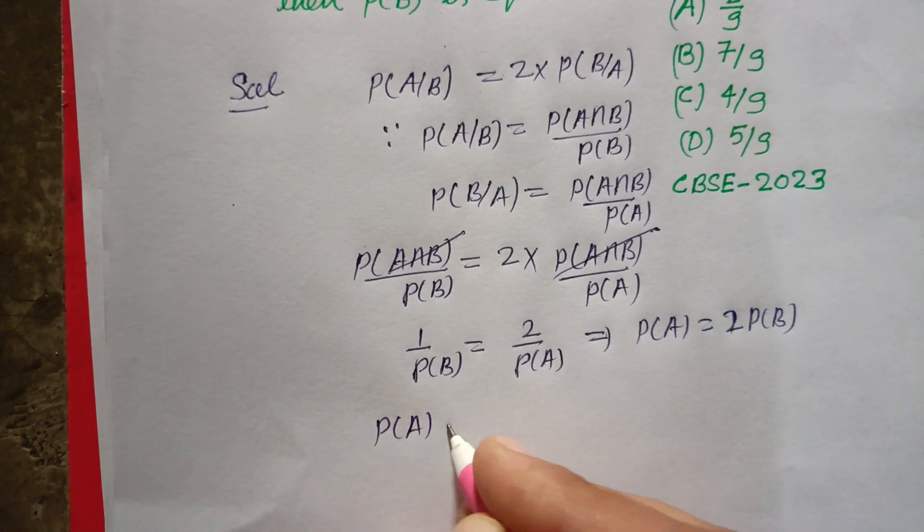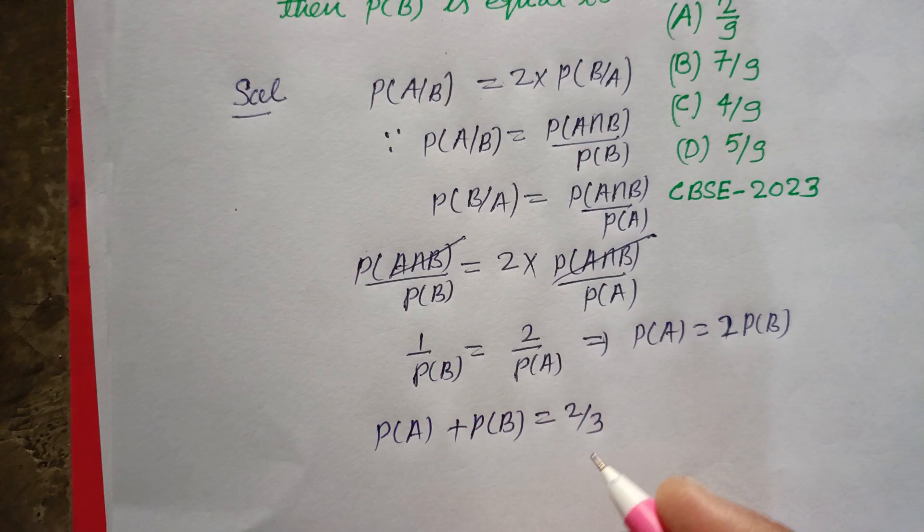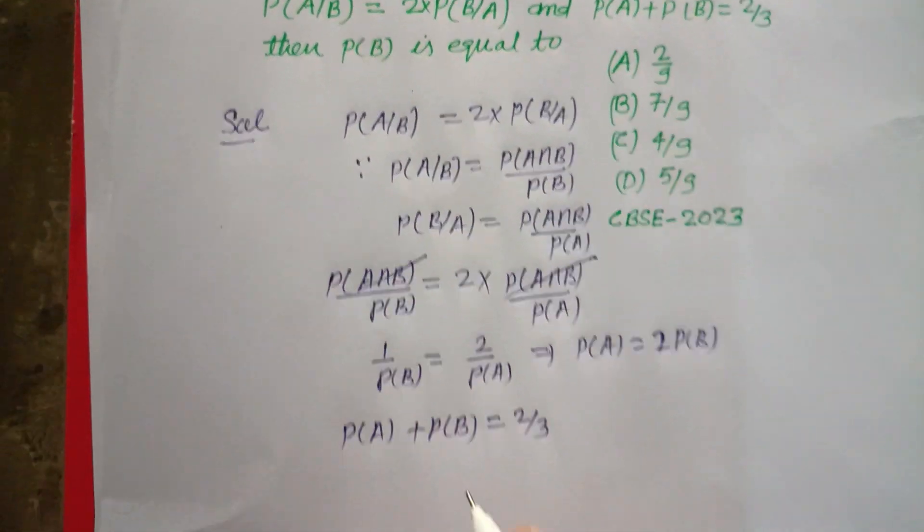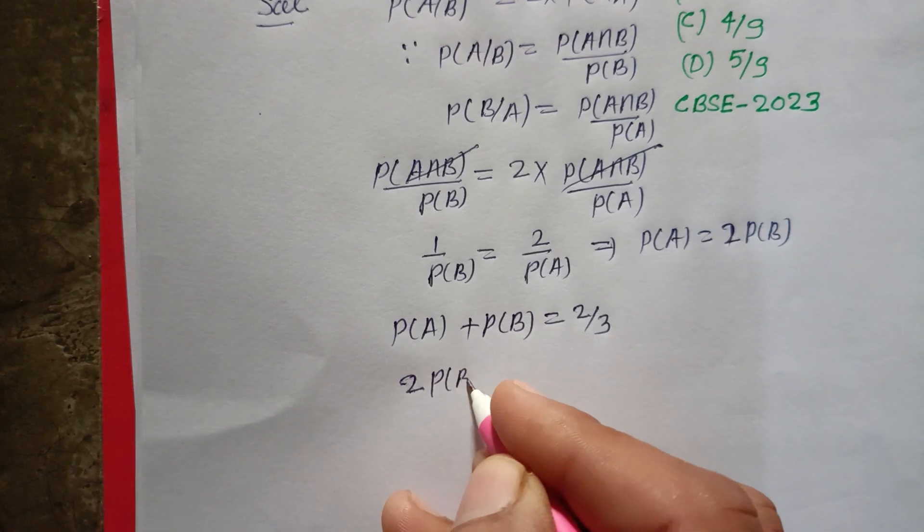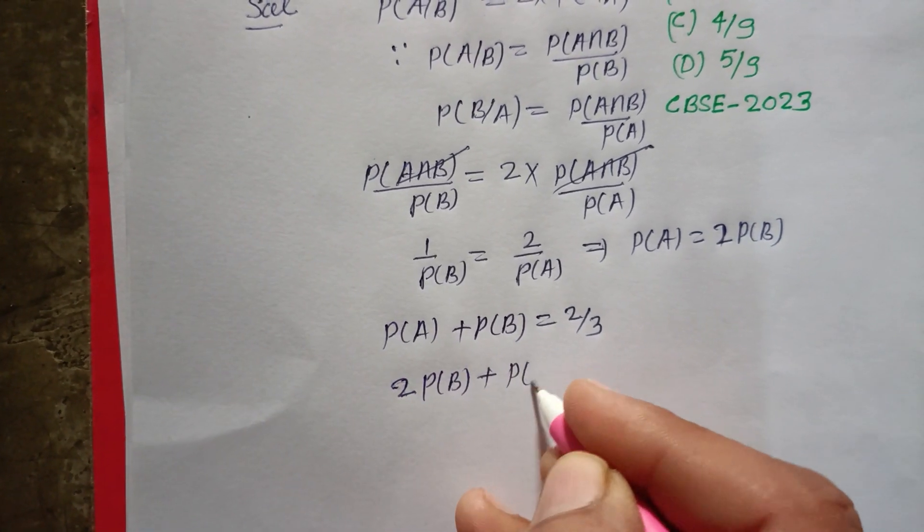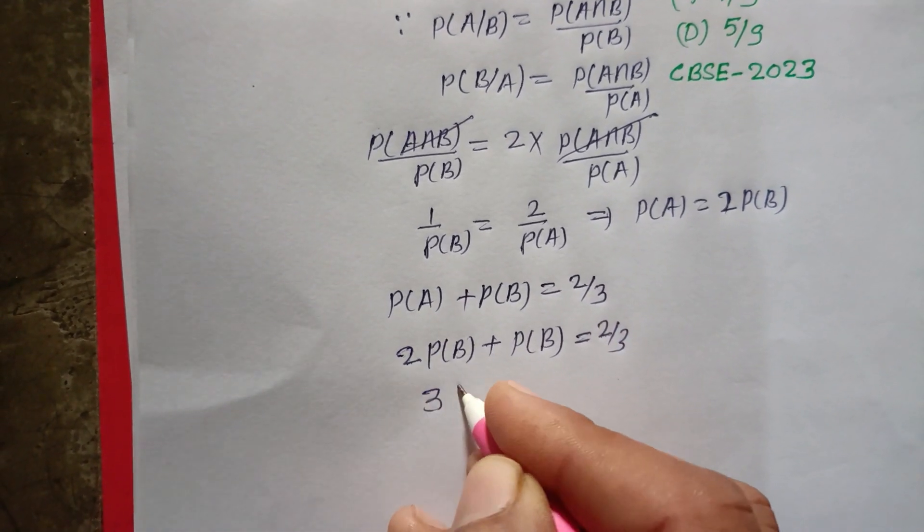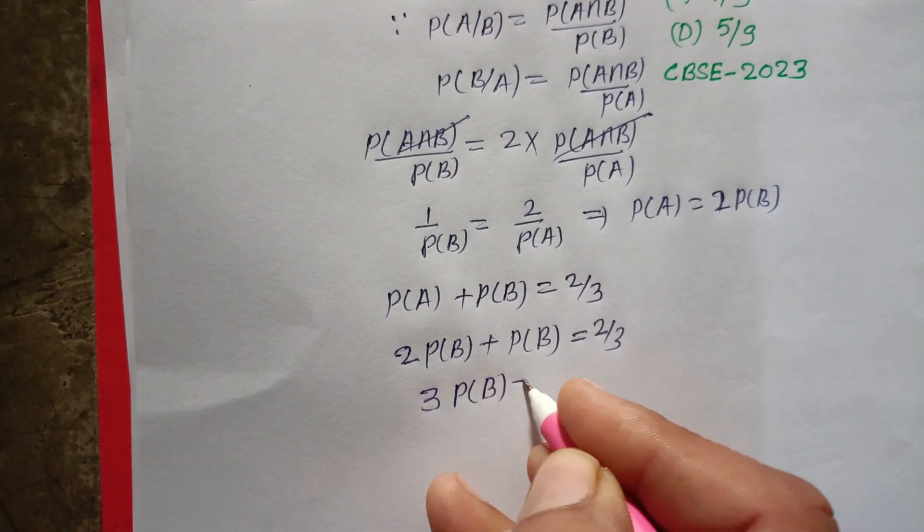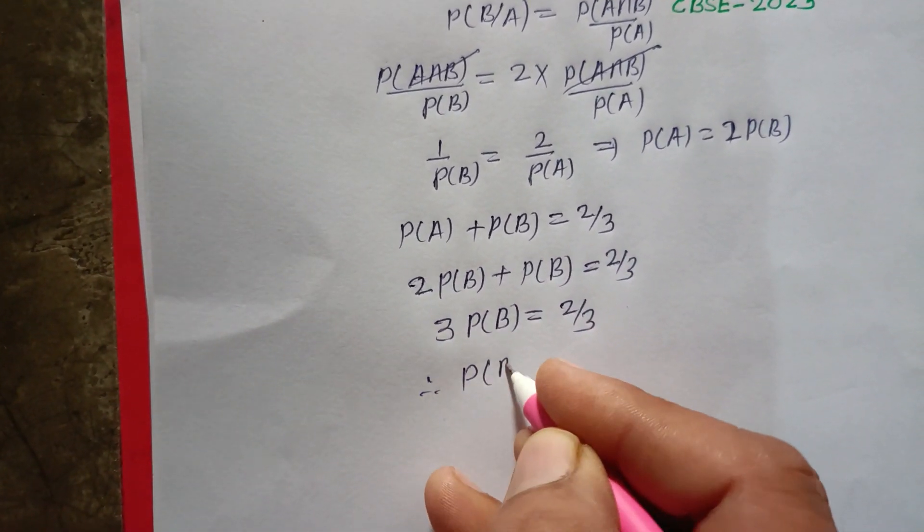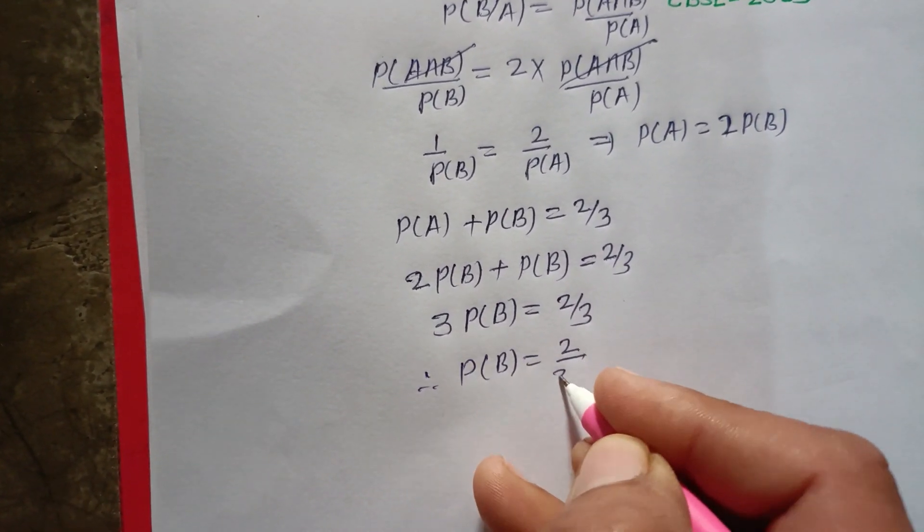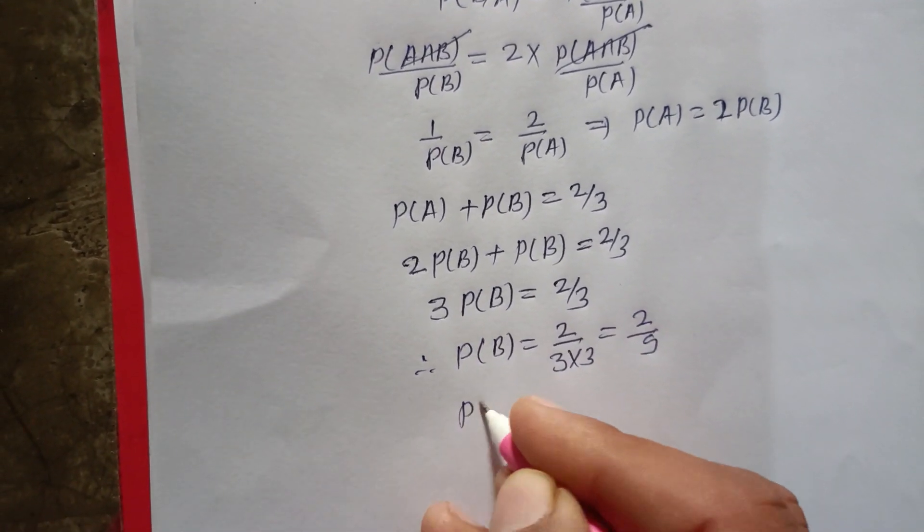We want to find P(B), so we put 2×P(B) in place of P(A). So 2×P(B) + P(B) = 2/3. This is 3×P(B) = 2/3. Therefore P(B) = 2/(3×3) = 2/9.